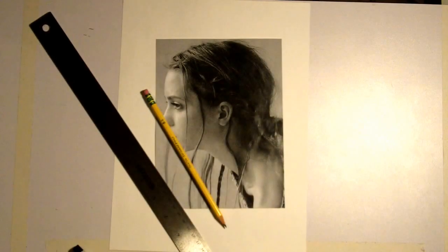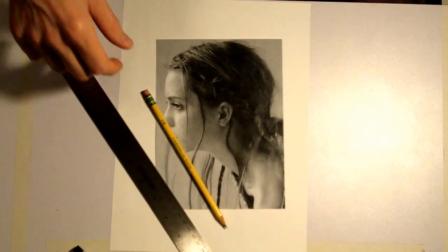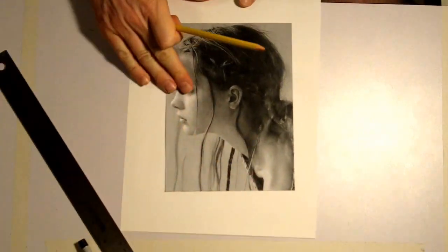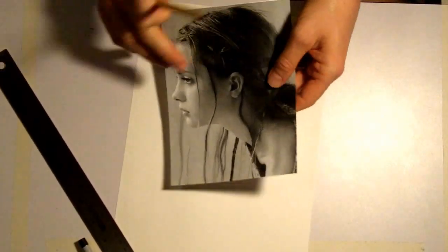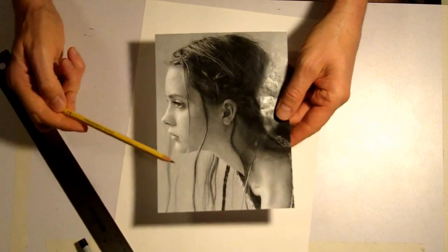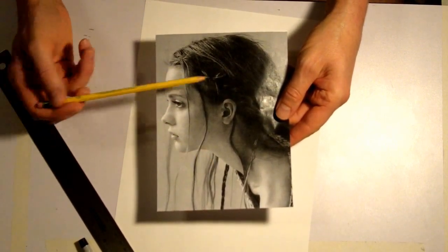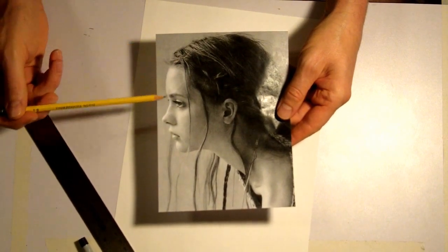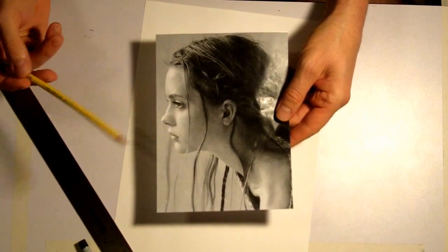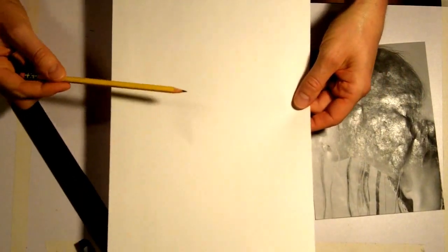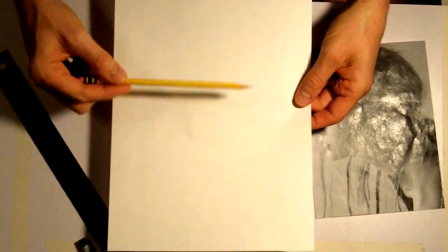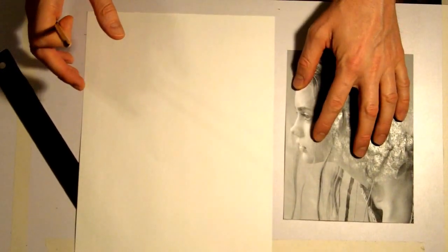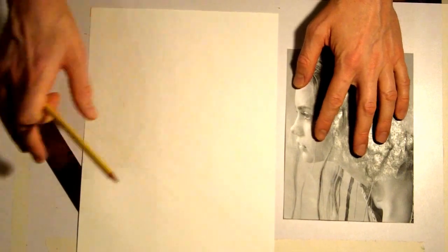The first step to creating a drawing using grids is to create the grids themselves. So in my example here I have this printed picture and the size is 6 inches by 8 inches. What I'm going to do is create a 1 inch grid on the small image and a one and a half inch grid on the bigger sheet of drawing paper. That's going to give me the same number of boxes on the small sheet as there are on the big sheet.